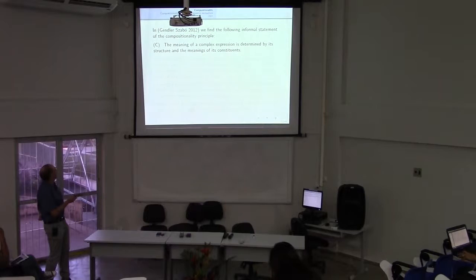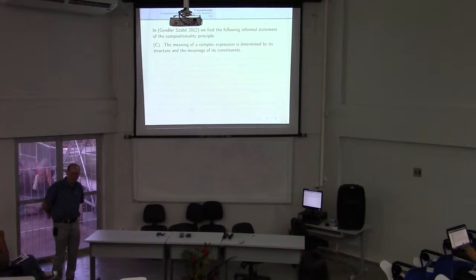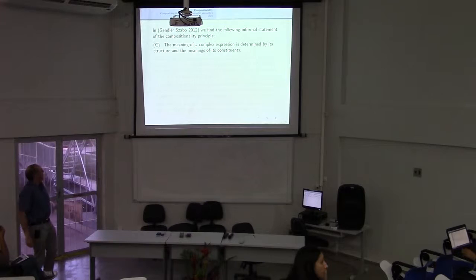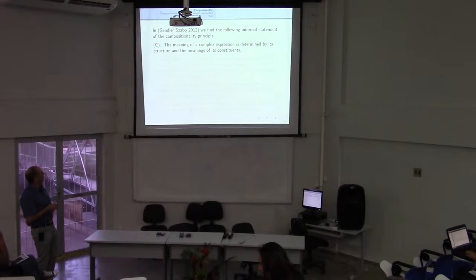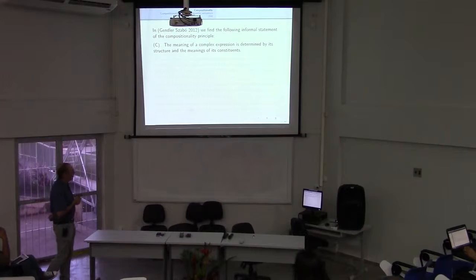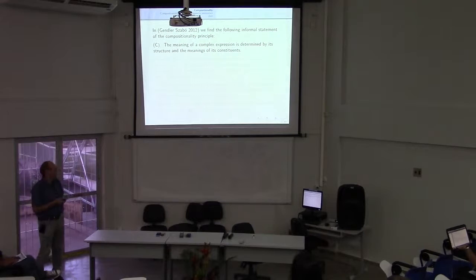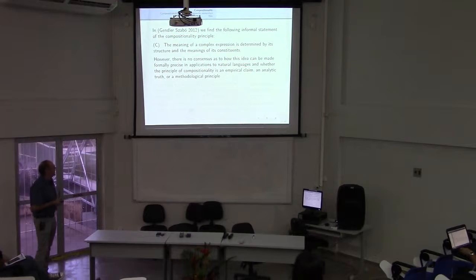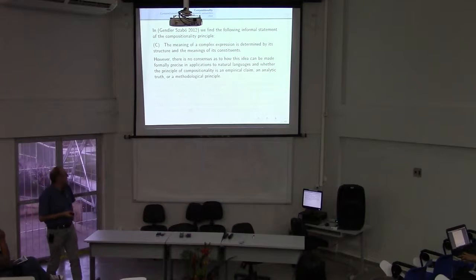What is compositionality? In Sultan Gendler-Jabbo's entry on compositionality in the Stanford Encyclopedia of Philosophy, he begins with a very informal statement of the principle: the meaning of a complex expression is determined by its structure and the meaning of its constituents. This way of stating the compositionality principle is rather uncontroversial, but also very informal, and there's no general agreement as to how this idea can be made formally precise in applications to natural language, nor as to whether the principle of compositionality is an empirical claim, an analytic truth, or rather a methodological principle.